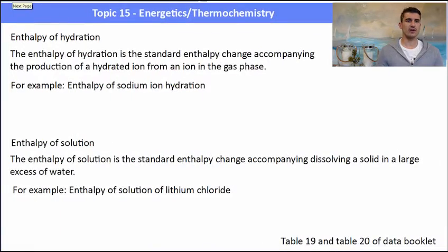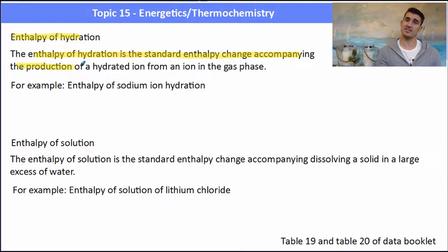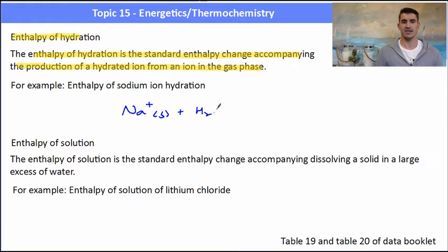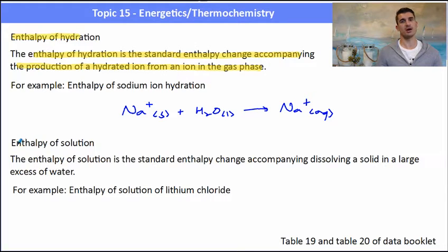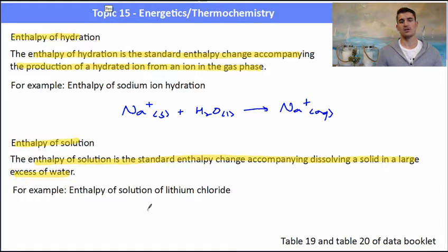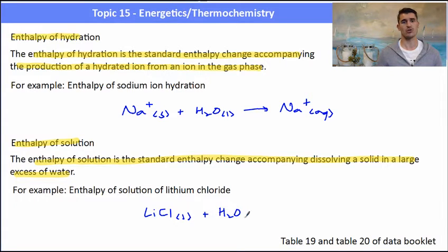The enthalpy of hydration is a measure of the standard enthalpy change accompanying the production of a hydrated ion from an ion in the gas phase — that is, ions in the gas phase becoming dissolved in solution. For example, the enthalpy of sodium ion hydration would be: Na⁺(g) + H₂O(l) → Na⁺(aq). The enthalpy of solution is the standard enthalpy change accompanying dissolving a solid in a large excess of water. For instance, lithium chloride as a solid can be dissolved in water to form lithium ions and chloride ions in aqueous solution.